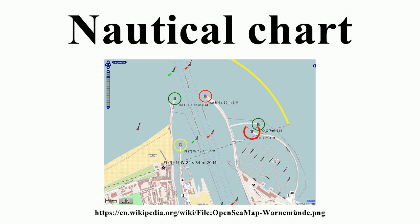Every producer of nautical charts also provides a system to inform mariners of changes that affect the chart. In the United States, chart corrections and notifications of new additions are provided by various governmental agencies by way of notice to mariners, local notice to mariners, summary of corrections, and broadcast notice to mariners. NOAA also has a printing partner who prints the NOAA charts, and they contain the very latest corrections and notifications at the time of printing.